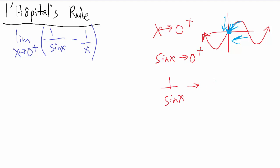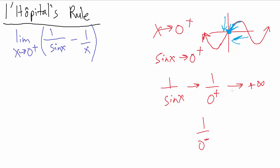So if sine of x approaches zero from the positive side, then one over sine of x approaches one over zero from the positive side. And because we approach zero from the positive side, one over this approaches plus infinity, or positive infinity. If we had one over zero approached from the negative side, that would go to negative infinity, but we don't have that. We have positive infinity.